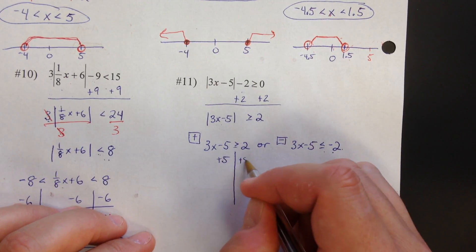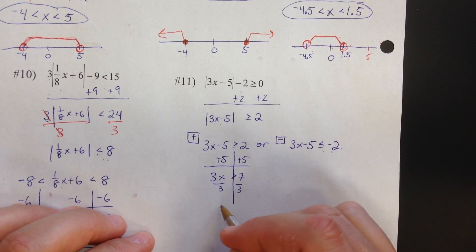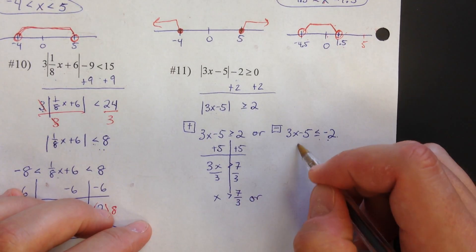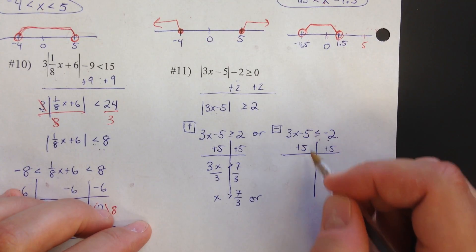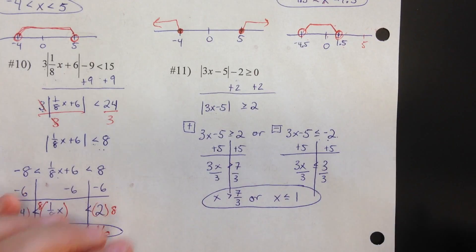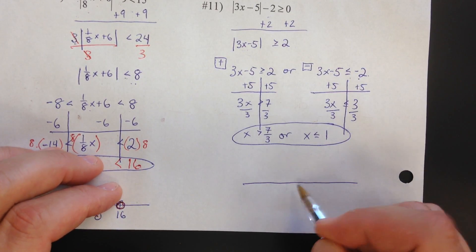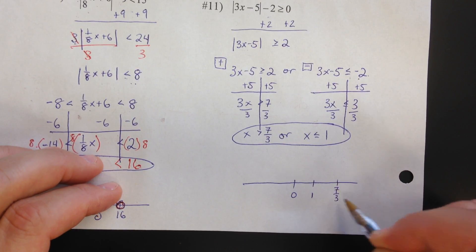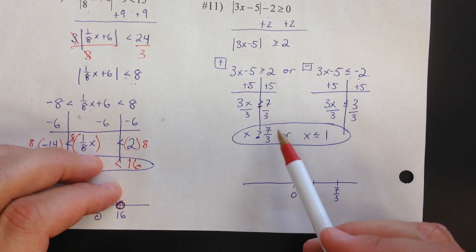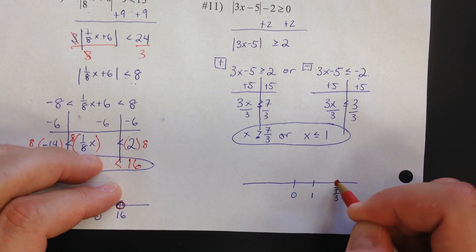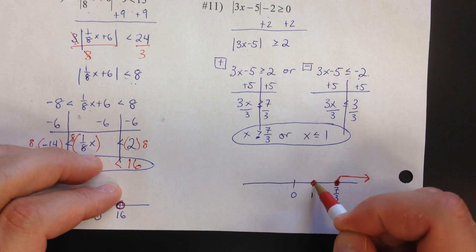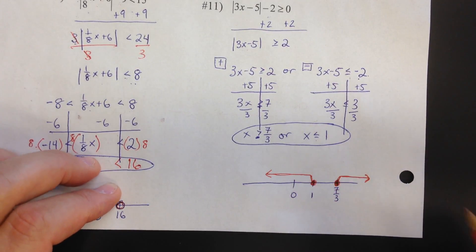So now we go ahead and solve it. Adding five and then dividing by three: you would get 7/3 — I'll leave it as a fraction rather than the repeating decimal 2.3 repeating. For the other case, adding five gives 3x less than or equal to three, so x is less than or equal to one. We get our two values. On the number line, here's zero, here's one, and seven-thirds is to the right of that. Greater than or equal to seven-thirds: closed circle going to the right. Less than or equal to one: closed circle going to the left. And that is the end of the notes.